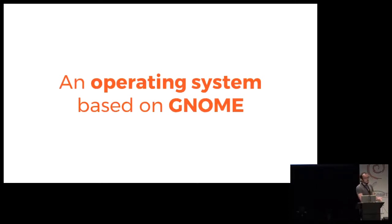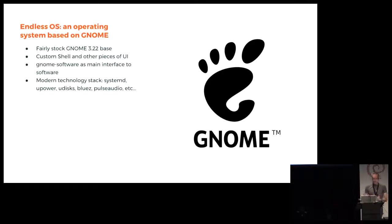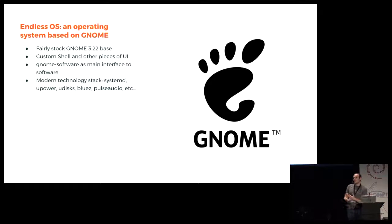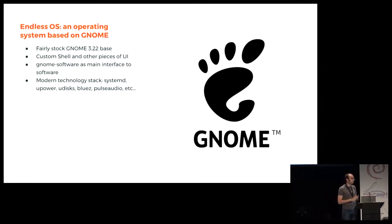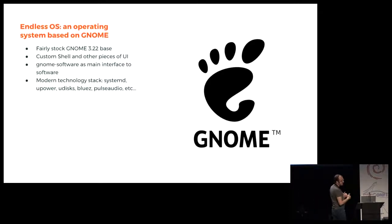Endless is an operating system based on GNOME — it uses a fairly stock GNOME 3.22 base with a custom shell and other interface pieces on top, such as a simplified initial setup. GNOME Software — an application center experience — is the main way you get or manage software on the device. The technology stack is similar to what a modern Debian or any other distribution uses: systemd, UPower, UDisks, BlueZ, PulseAudio, and so on.